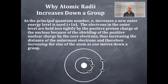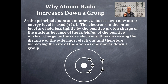As the principal quantum number n increases, a new outer energy level is used — that is plus 1n. The electrons in the outer level are held less tightly by the positive proton charge of the nucleus because of the shielding of the positive nuclear charge by the core electrons, thus increasing the distance of the outermost electrons and therefore increasing the size of the atom as one moves down a group.